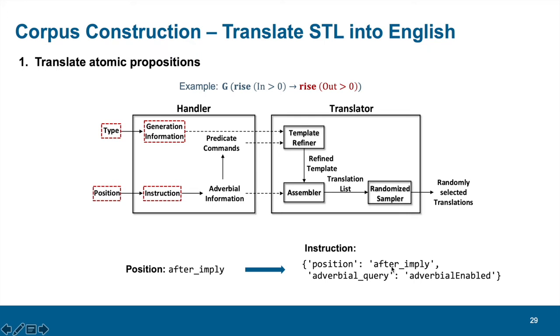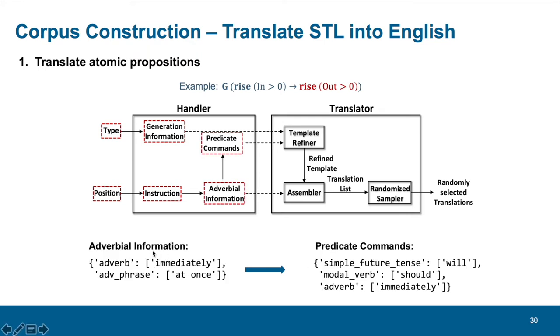Then the handler will retrieve related adverbial information in the program database. For example, here we can use the adverb immediately or the adverbial phrase at once. Then again, the predicate commands will also be retrieved in the database with the insertion of the adverbs collected just now. For example, with the modification of adverb immediately, we can use simple future tense or use modal verbs like should for translation.